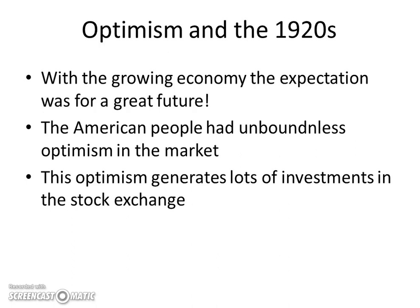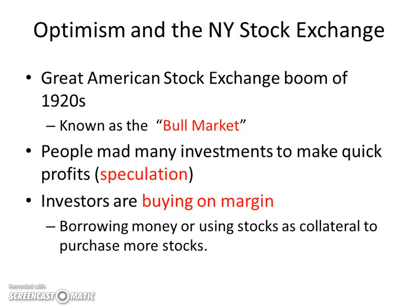This optimism generated a lot of investments in the stock exchange. The New York Stock Exchange had a great big boom during the 1920s, which became known as a bull market — a term still used today. When the market takes a big shot upwards, people became sort of mad with investing and made lots of investments to get quick profits, buying and selling often in the same day as stocks went up throughout the course of a day. This is called speculation. Investors also began buying on margin, using either borrowed money or their own stocks as collateral to purchase more stocks.